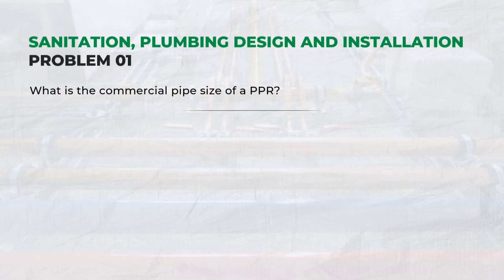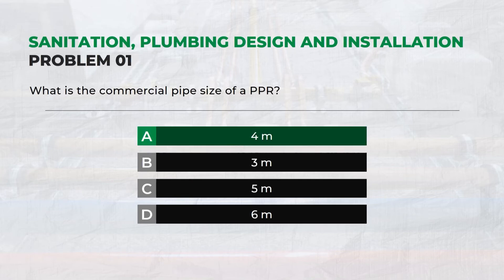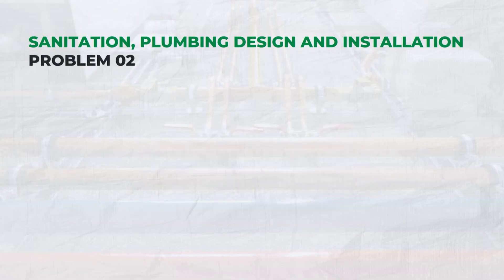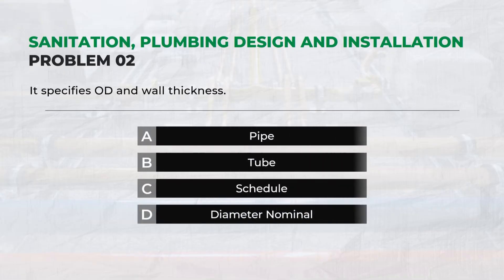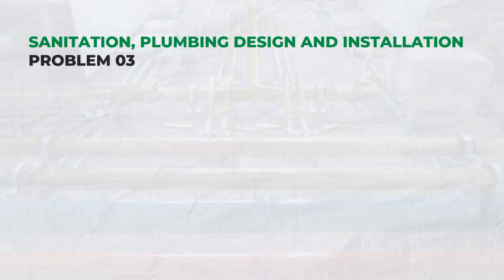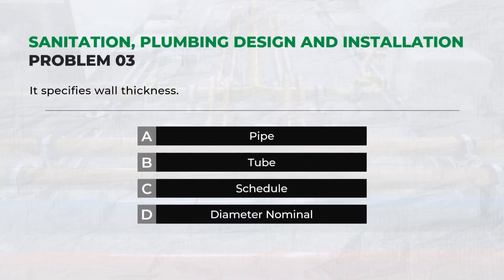What is the commercial pipe size of a PPR? A: 4 meters. It specifies OD and wall thickness. B-tube: it specifies wall thickness. C: Schedule.